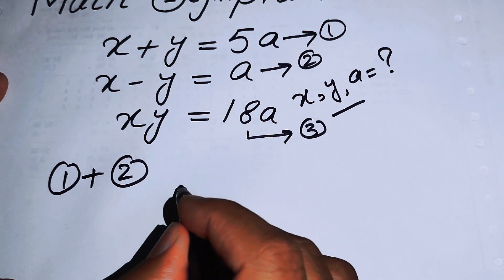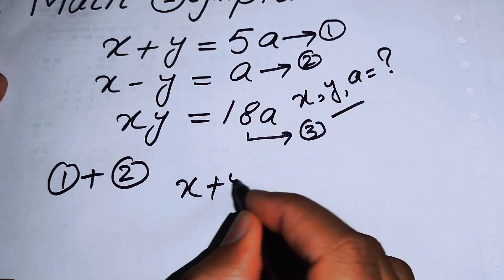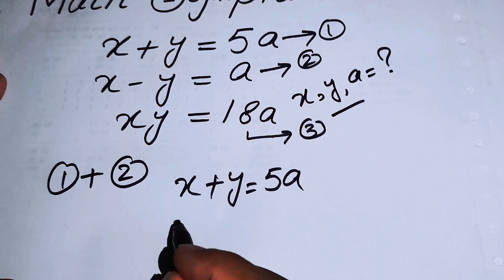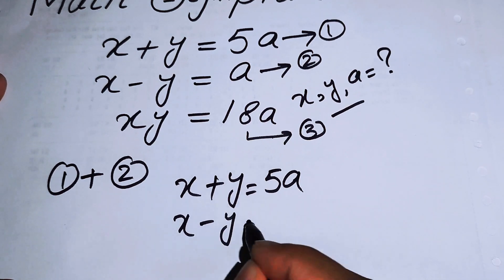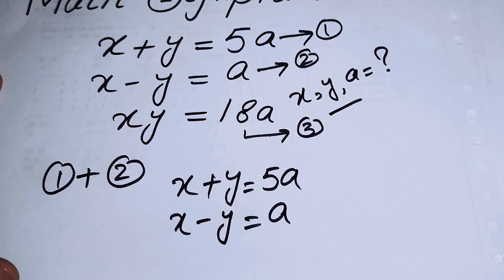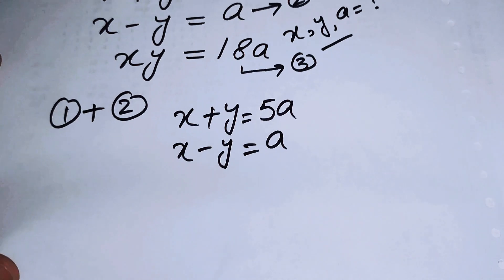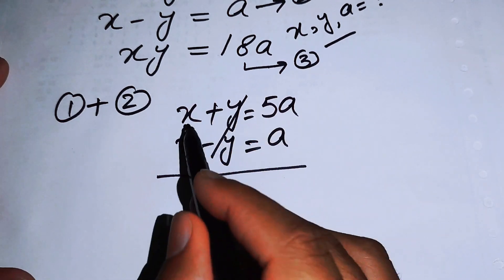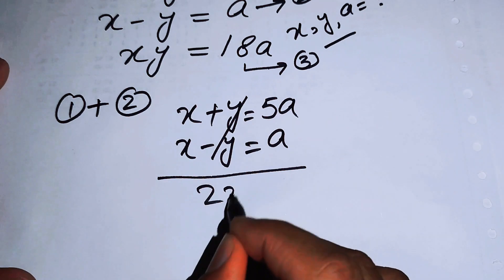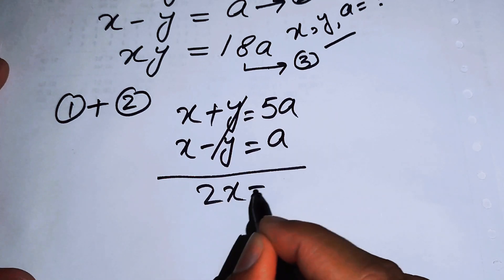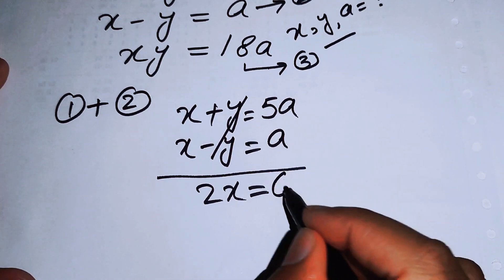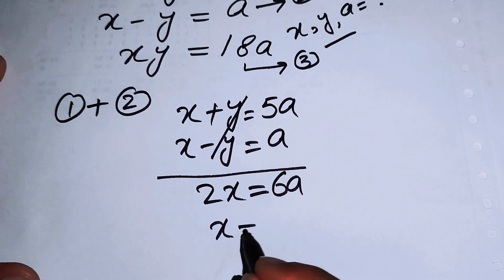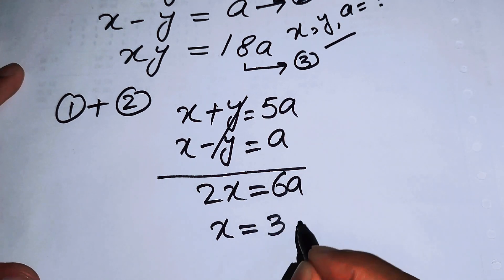Adding equation one and equation two: x plus y equals 5a, and x minus y equals a. When we add these two equations, the y terms cancel out, giving us 2x equals 5a plus a, which equals 6a. Therefore the value of x is 3a.